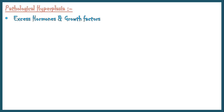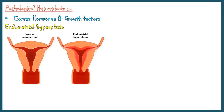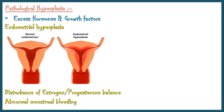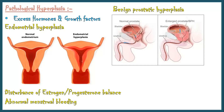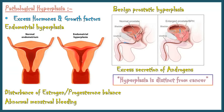Most forms of pathological hyperplasia are caused by excess secretion of hormones and growth factors. Endometrial hyperplasia occurs due to a disturbance between estrogen and progesterone balance and is frequently associated with abnormal menstrual bleeding. Benign prostatic hyperplasia is due to excess secretion of androgens. Although these forms are abnormal, the process remains controlled because there are no mutations in genes that regulate cell division. Therefore, hyperplasia is distinct from cancer; however, uncontrolled hyperplasia may leave the individual at risk of developing cancer.